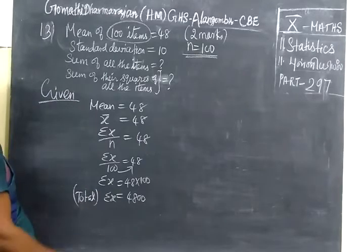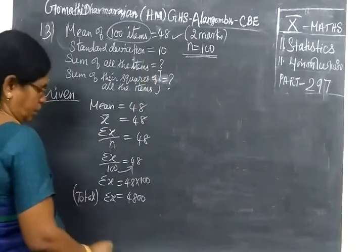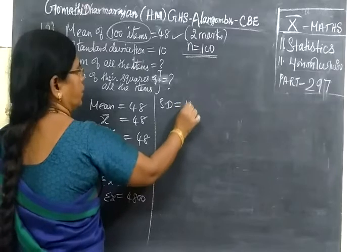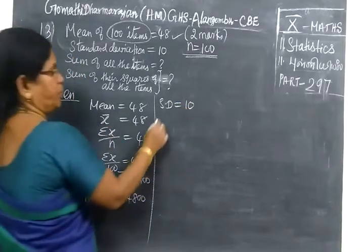Next it is given standard deviation equal to 10. So you have given SD equal to 10. Variance is what? Standard deviation squared. So variance equal to 10 square equal to 100.